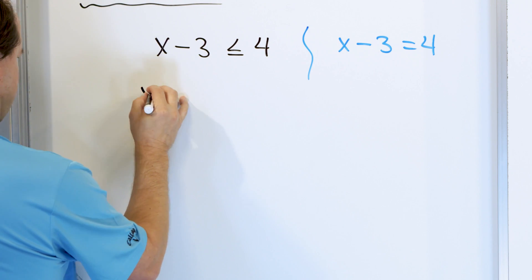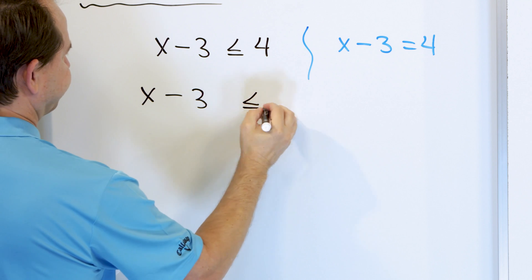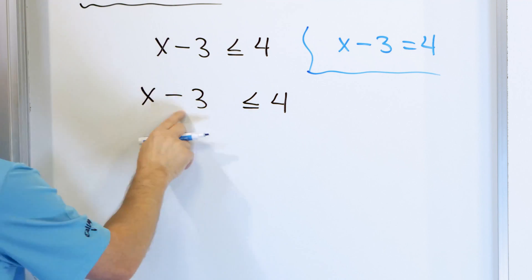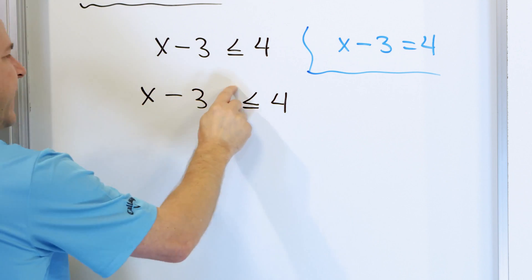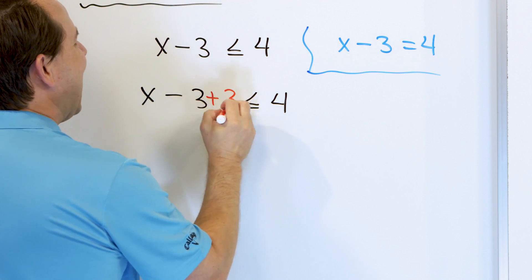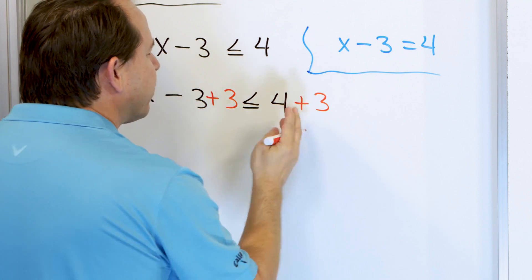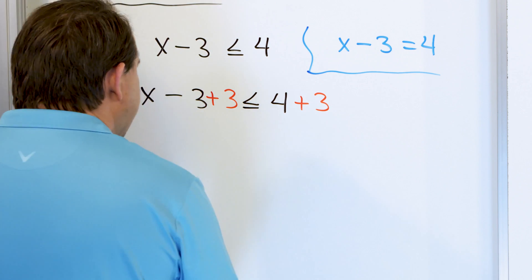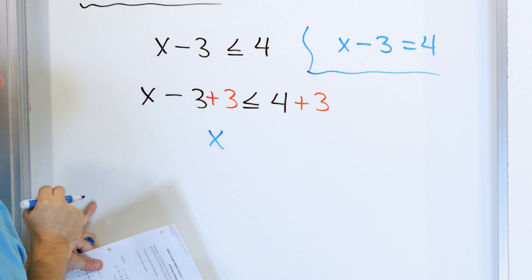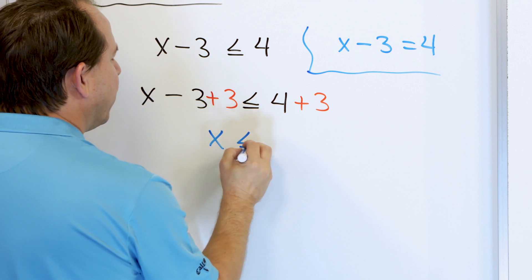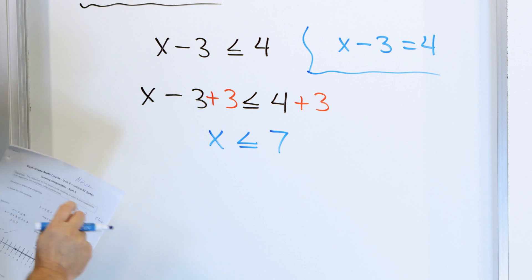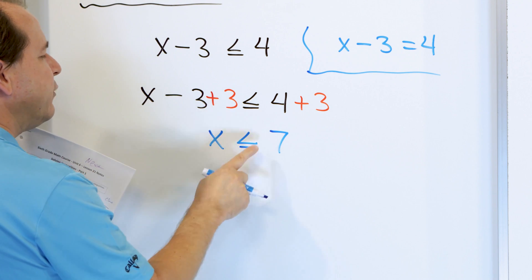Let's go ahead and rewrite the problem. We have a minus three on the left, so we do the opposite by adding three to both sides. Minus three plus three cancels out to zero, so all we have on the left is x. The inequality symbol stays the same, pointing the same direction. And four plus three is seven. So what we've figured out is that x has to be less than or equal to seven.